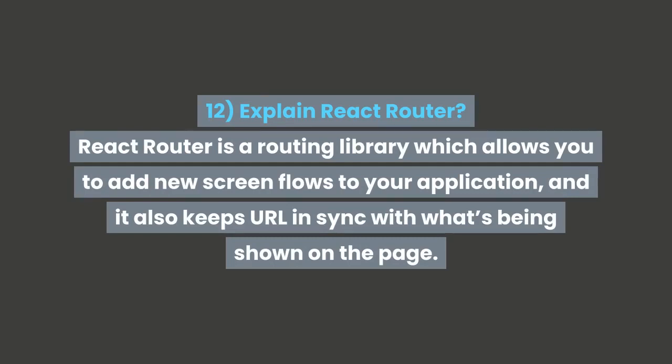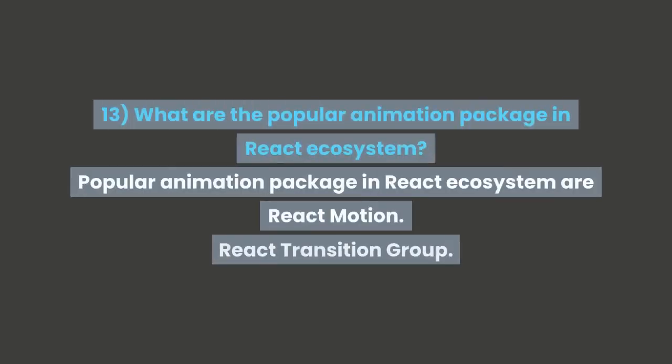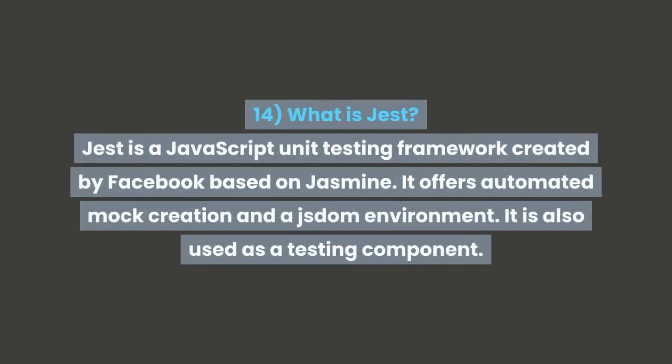React Router also keeps the URL in sync with what's being shown on the page. Question 13: What are the popular animation packages in the React ecosystem? Popular animation packages in the React ecosystem are React Motion and React Transition Group. Question 14: What is Jest? Jest is a JavaScript unit testing framework created by Facebook, based on Jasmine.